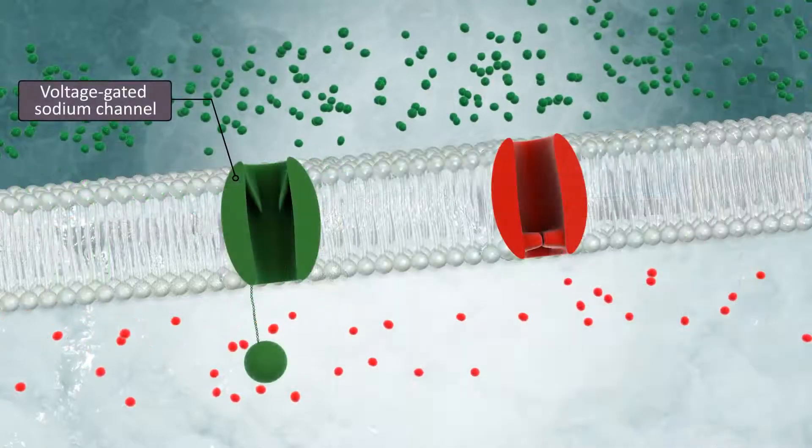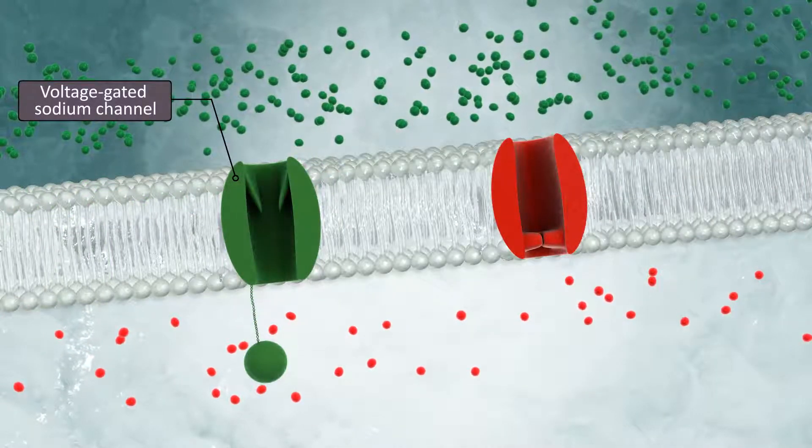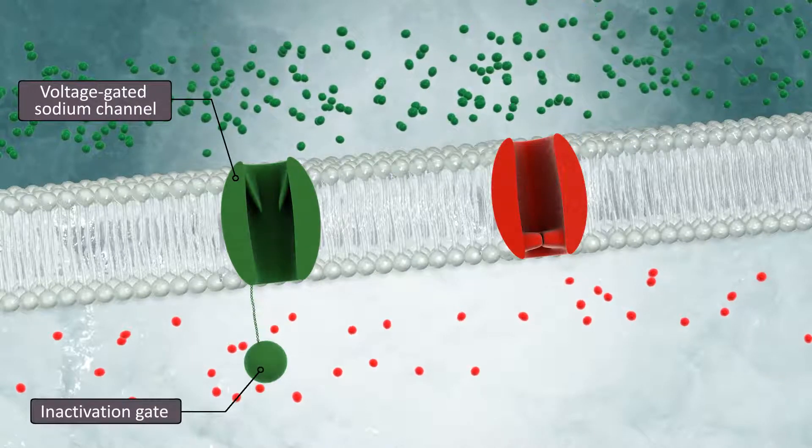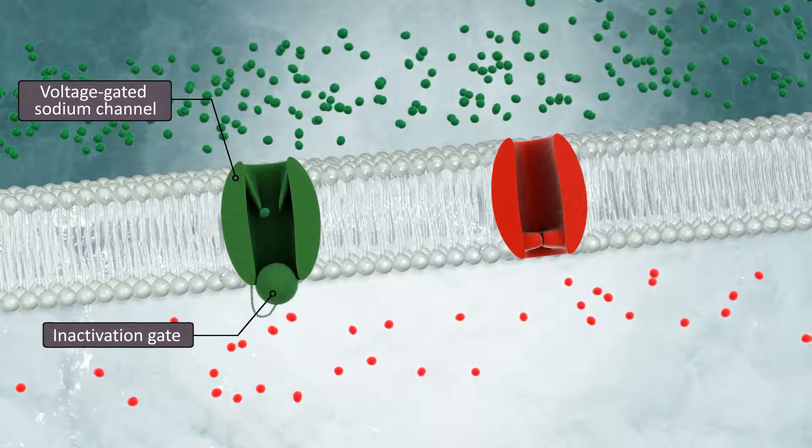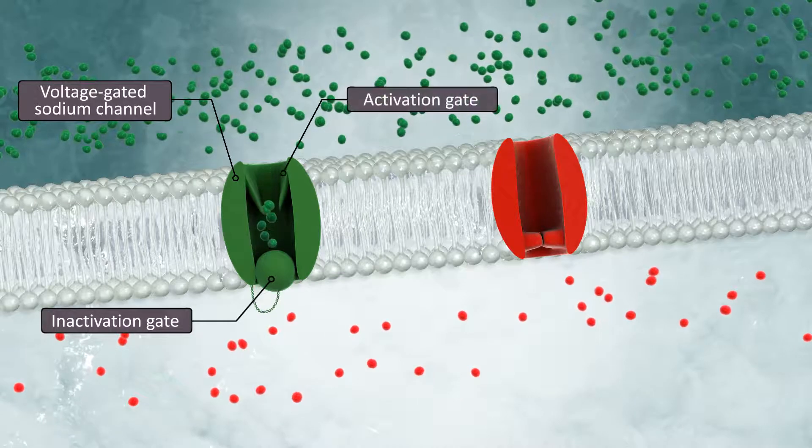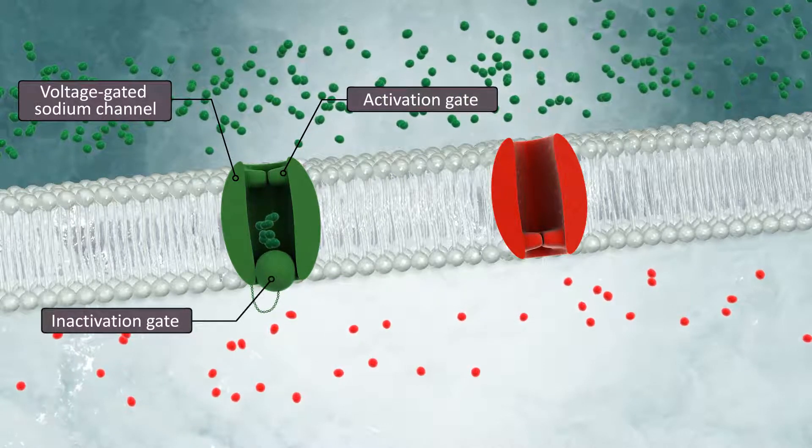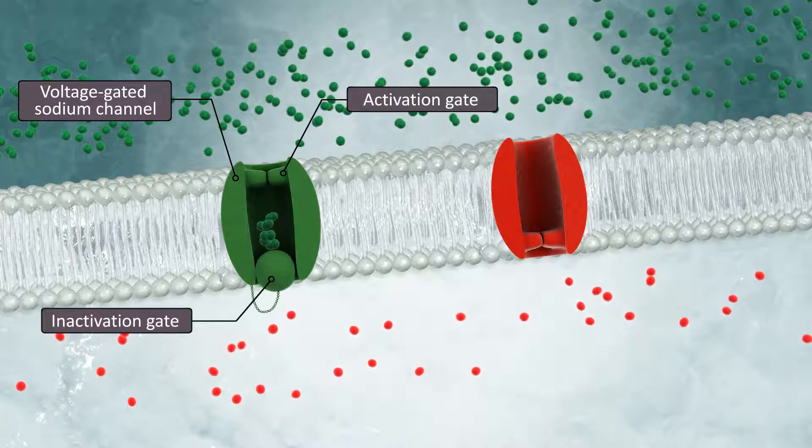Some voltage gated channels have an additional gate, referred to as an inactivation gate, which temporarily plugs the channel so ions cannot pass through, even if their activation gate is open. Its purpose is to ensure that ions do not pass through the gate at an inappropriate time.